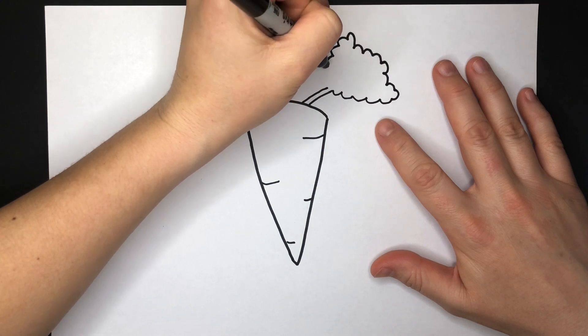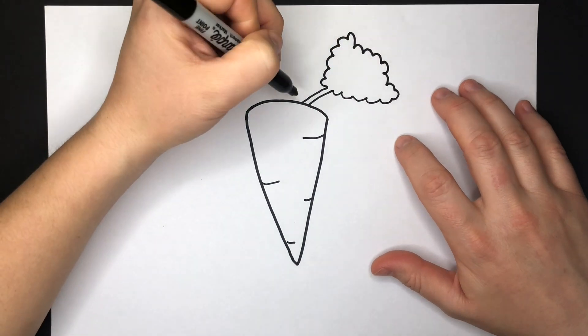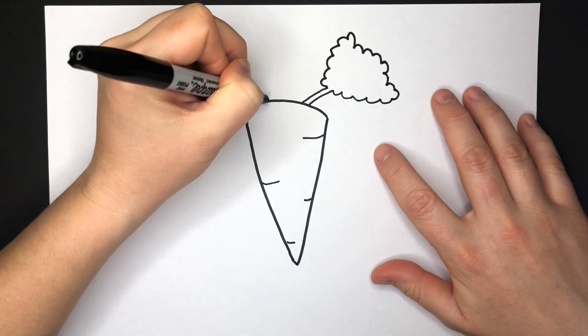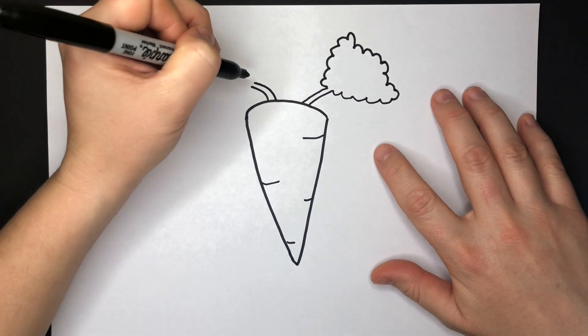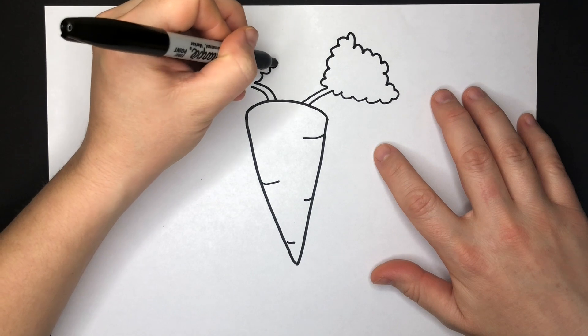They're such a nutritional snack. As I'm sure you've heard before, they're great for your vision. And a fun fact is that you can eat the greenery on a carrot. It's actually quite delicious.